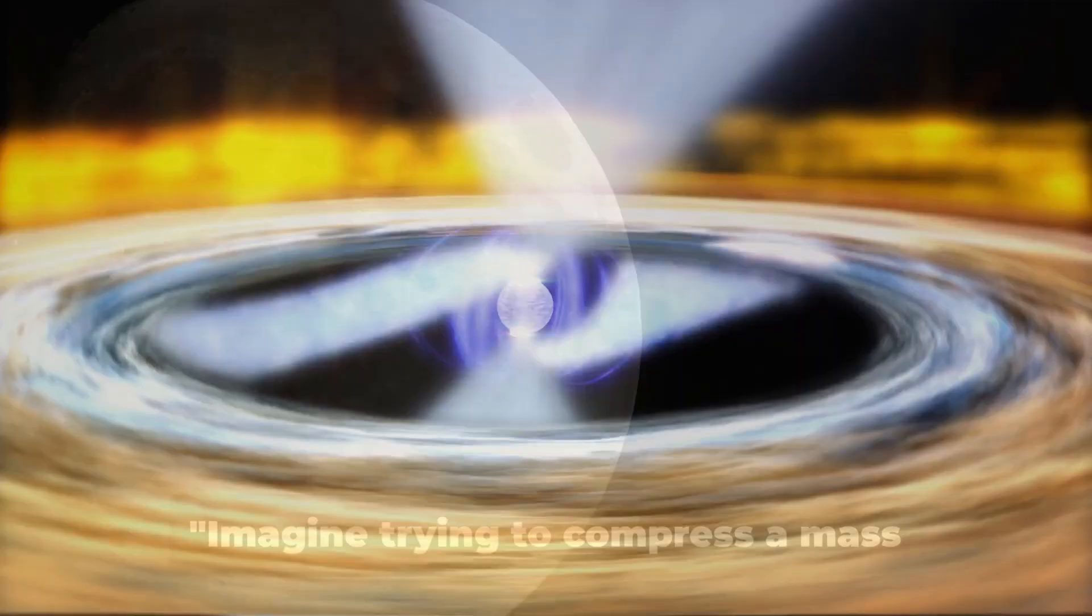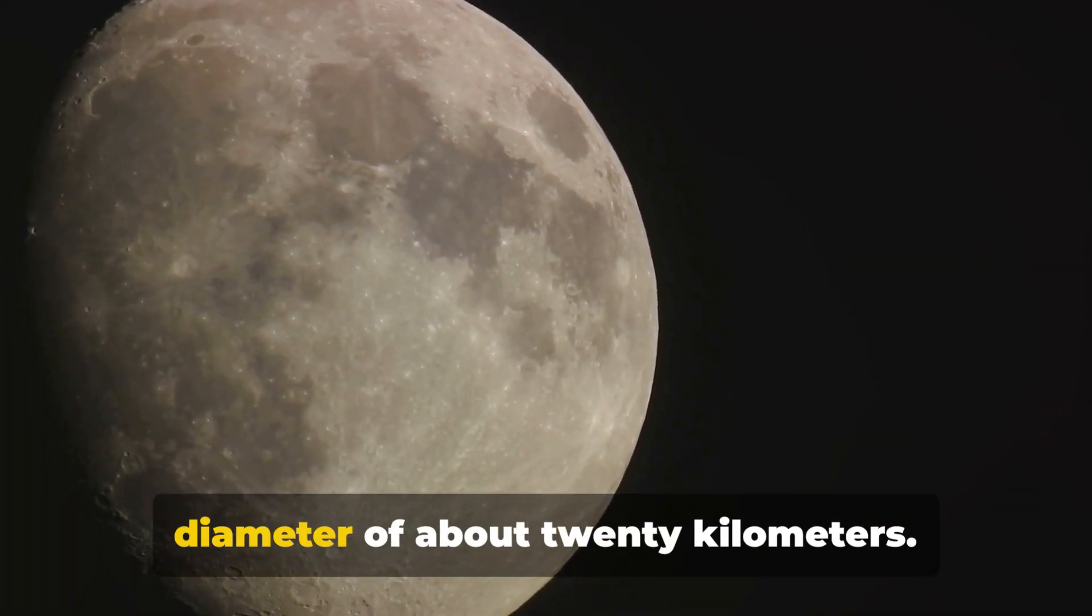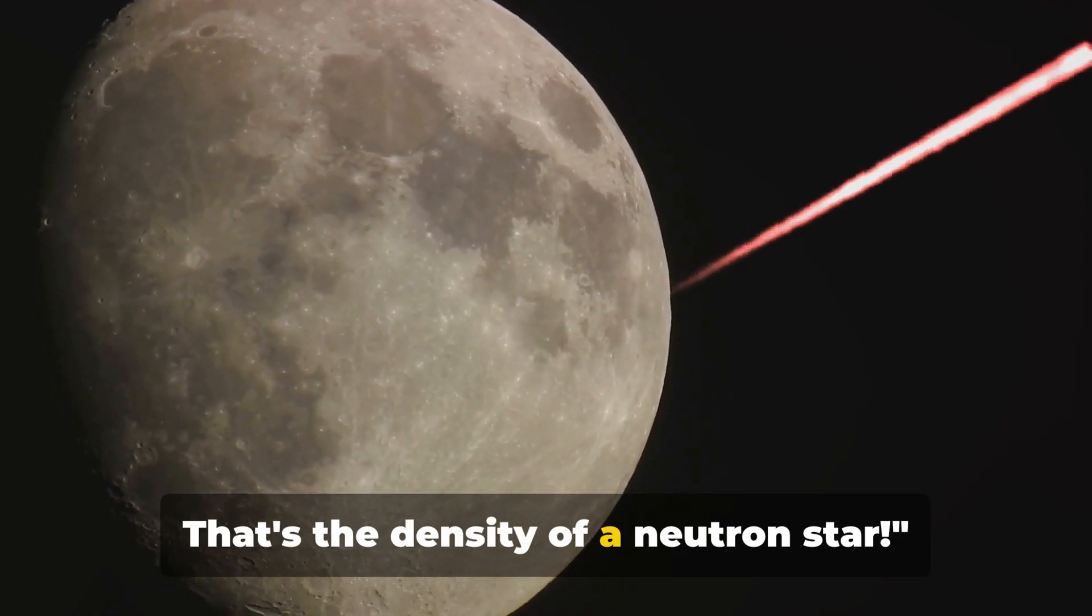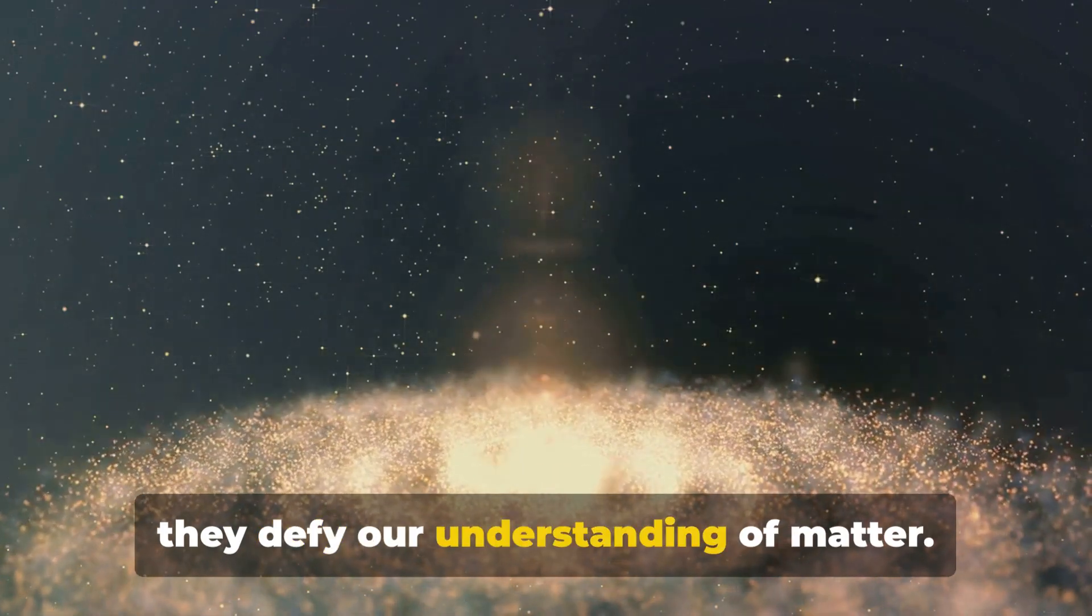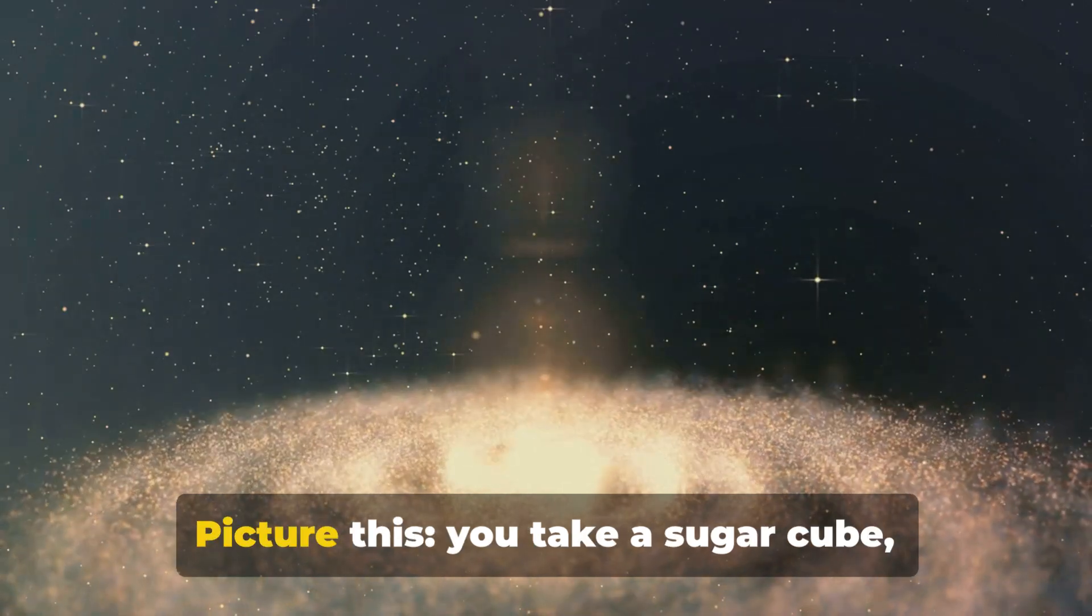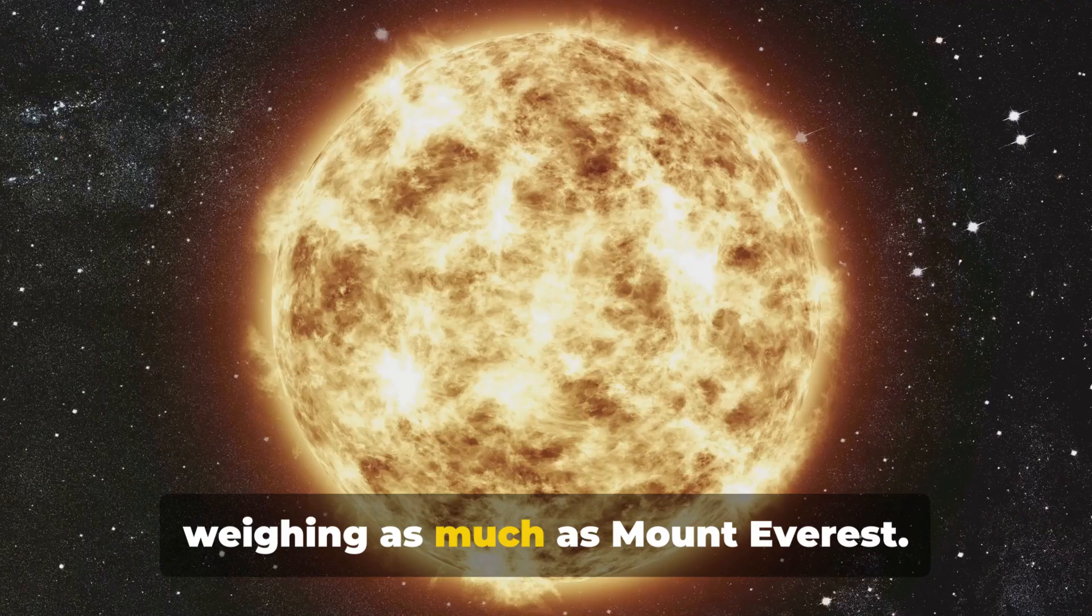Imagine trying to compress a mass greater than the sun into a sphere with a diameter of about 20 kilometers. That's the density of a neutron star. These celestial bodies are so dense that they defy our understanding of matter. Picture this: you take a sugar cube right now, imagine that sugar cube weighing as much as Mount Everest.